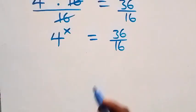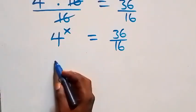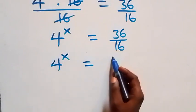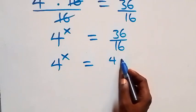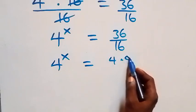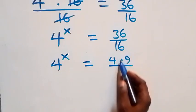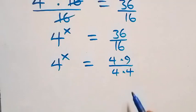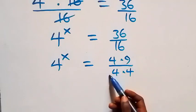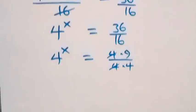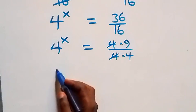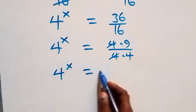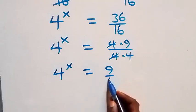We can write 36 over 16 as 4 times 9 over 4 times 4. The 4s cancel each other, so this becomes 4 raised to power x equals 9 over 4.